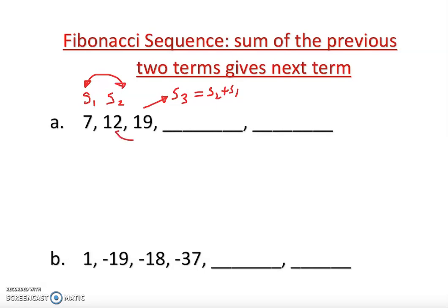So 12 plus 19, it should give you 41. That's how you find the Fibonacci sequence. Now, I want to find out the next term. So I have to do 41 plus 19 and that should give me 60.